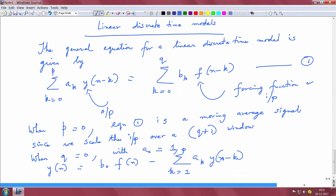Just rewriting this equation again. This is the forcing part and the output at time n depends upon the previous output at various time delays: at n-1, n-2, n-3, and so on.